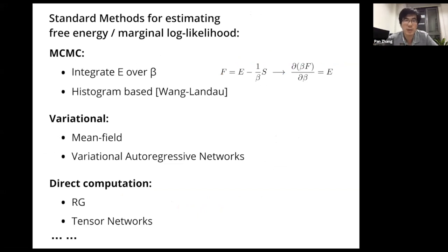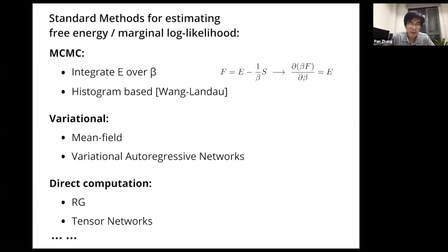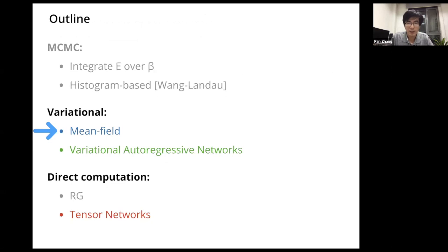Since this standard statistical mechanics problem is important, there are already many methods for estimating free energies, equivalent to the marginal log likelihood. The most straightforward method is MCMC, where we can integrate the energy over beta, or use histogram-based methods. Another kind of method is variational ones, such as the mean field method and the variational autoregressive networks I'm going to talk about. The third approach is direct computation of the free energy using, for example, renormalization group methods or tensor networks. In this talk I'm going to cover all three: mean field, neural network-based variational methods, and tensor networks.